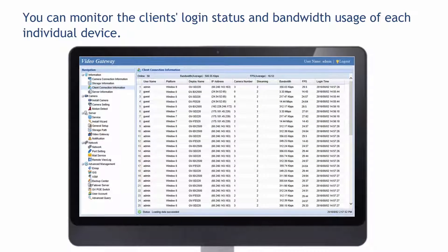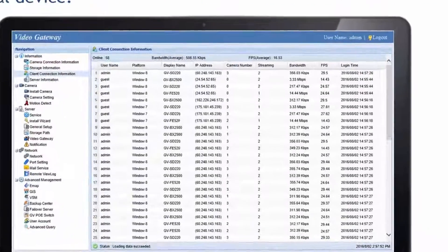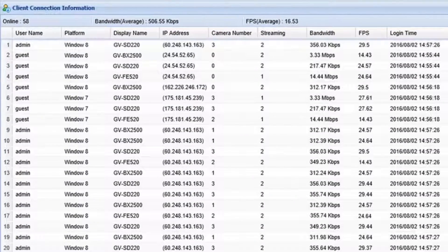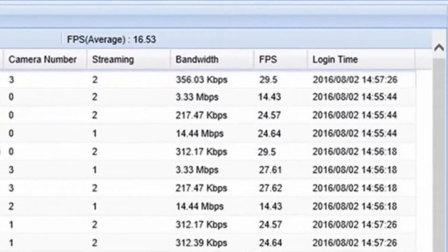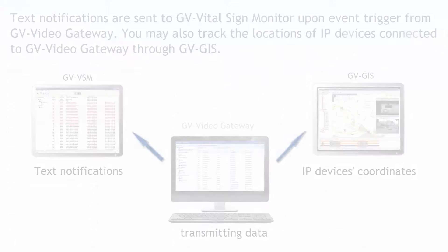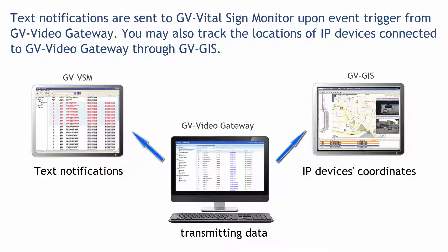You can monitor the client's login status and bandwidth usage of each individual device. Text notifications are sent to GV Vital Sign Monitor upon event trigger from GV Video Gateway. You may also track the location of IP devices connected to GV Video Gateway through GV GIS.